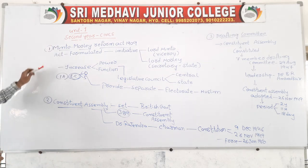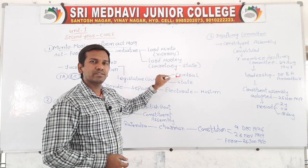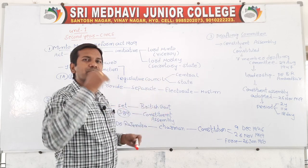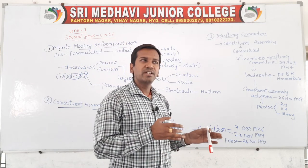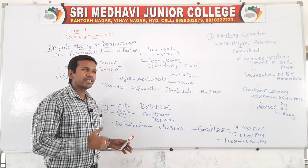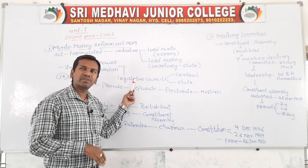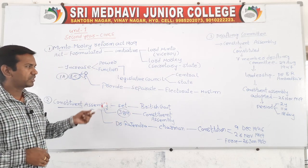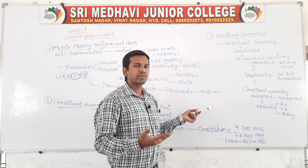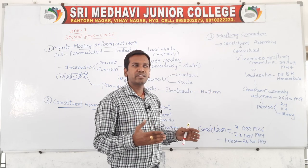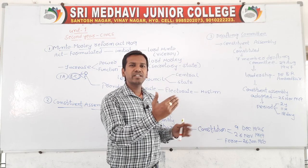So the two important functions are: one, legislative councils were set up at central and state level with increased powers. Today, legislative councils are not present in many states — only about six to seven states have legislative councils, while in the central level Rajya Sabha is considered the legislative council. Second, separate electorates were provided for the minority, who had demanded reserved seats since around 1907 so that minority representatives could protect their interests.